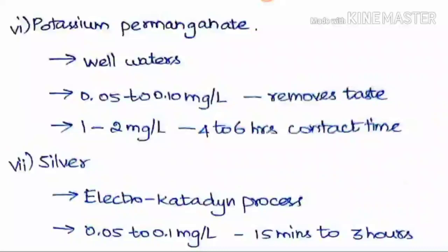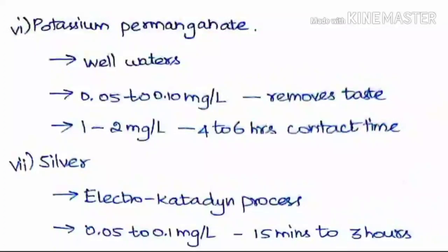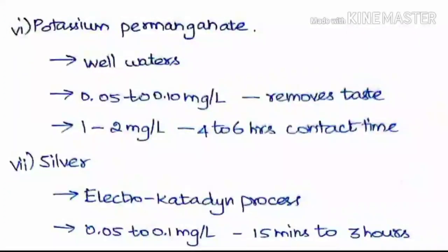Potassium permanganate is a common method used in villages for treating well water. It is directly mixed into the well water. When mixed it gives a pink color; if the color is not visible it means the water contains more organic matter and pollutants, so more must be added. A residual of nearly 0.05 to 2.1 mg/L will remain. It removes taste caused by organic matter, with a dosage of 1 to 2 mg/L and a contact time of 4 to 6 hours.